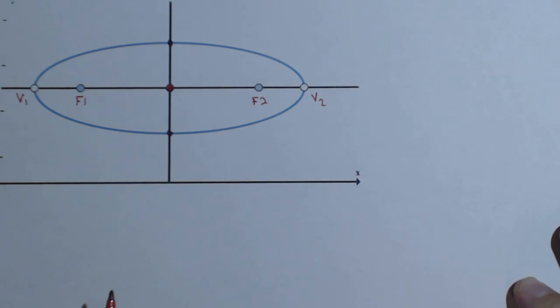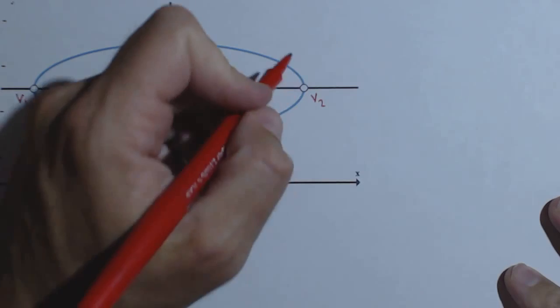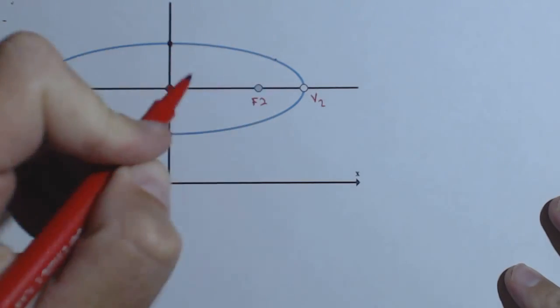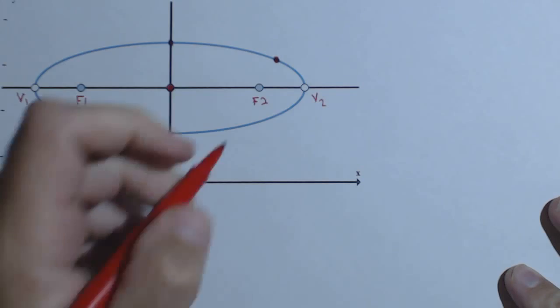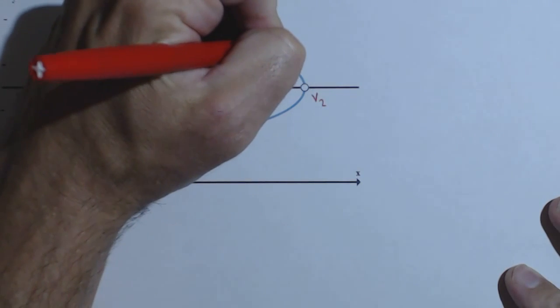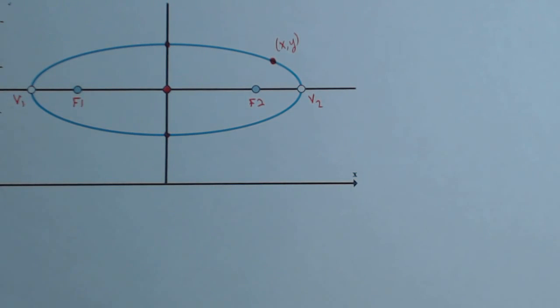Now, to derive the formula, first thing we're going to do is pick some arbitrary point on our ellipse. So this has the value X, Y. So again, we're doing this centered at 0,0. We're going to see that it's going to work for any ellipse that we want to use.